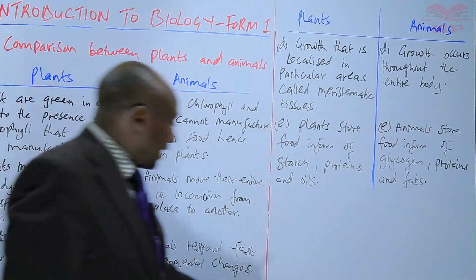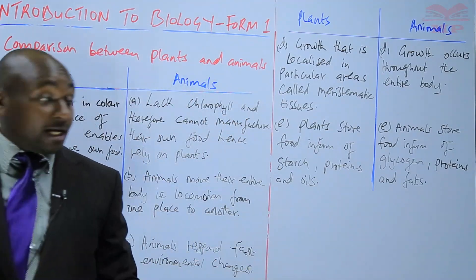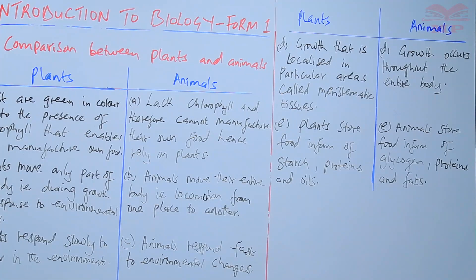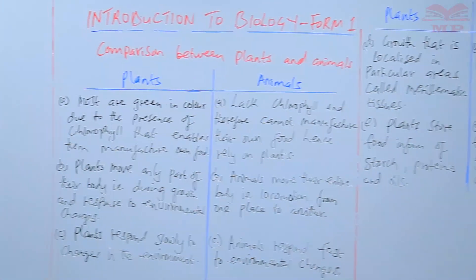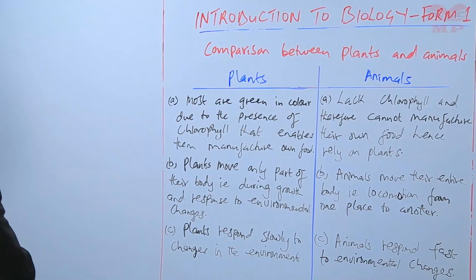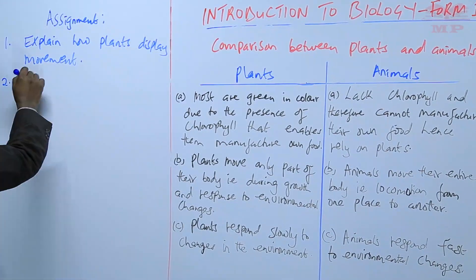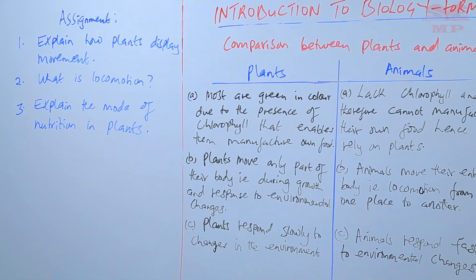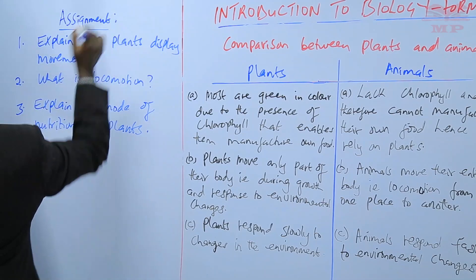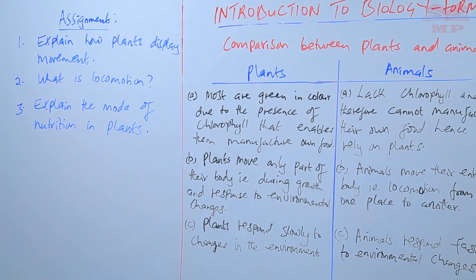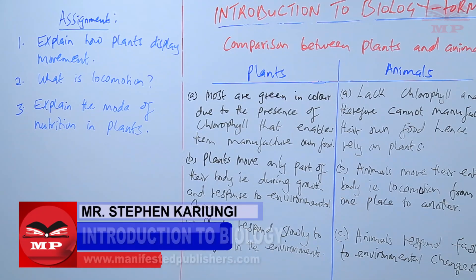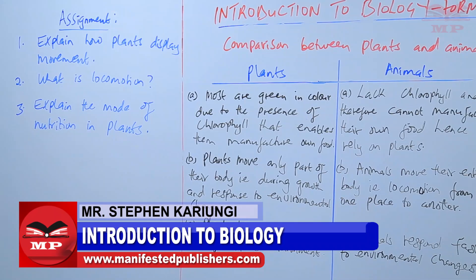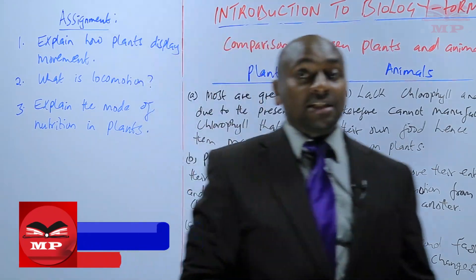That marks the end of this topic. We are going to have a short assignment on the topic. Question one: explain how plants display movement, or how they show movement. Number two: what is locomotion? And number three: explain the mode of nutrition in plants. We'll stop there — until next time, goodbye.